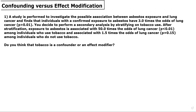So in this case, a study is performed to investigate the possible association between asbestos exposure and lung cancer, and finds that individuals with a confirmed exposure to asbestos have three times the odds of lung cancer, which is a statistically significant finding. You then decide to perform a secondary analysis by stratifying on tobacco use, and find that after stratification, exposure to asbestos is associated with 50 times the odds of lung cancer among individuals who use tobacco, and associated with 1.5 times the odds of lung cancer among individuals who do not use tobacco, with those findings being statistically significant and non-statistically significant, respectively. And we're asked, do you think that tobacco is a confounder or an effect modifier?